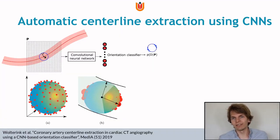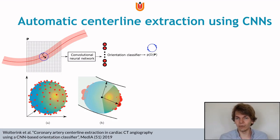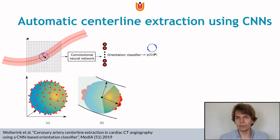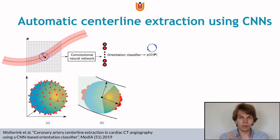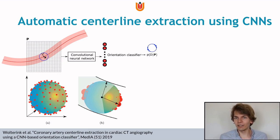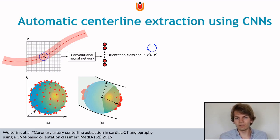We want to extract center lines. To the best of our knowledge this has never been done in the small intestine, but it is an established task in other domains such as vasculature and airways. Shown here is a schematic overview of a method published by our group for extracting coronary artery center lines in CT. This method consists of a network that operates on 3D patches around an artery and predicts the next directions. By starting at a seed point and iteratively stepping in the direction with the highest predicted probability, you can extract the center line. When the logit confidence drops below a threshold, tracking stops. Can we apply a similar method to the small intestine? Let's find out.